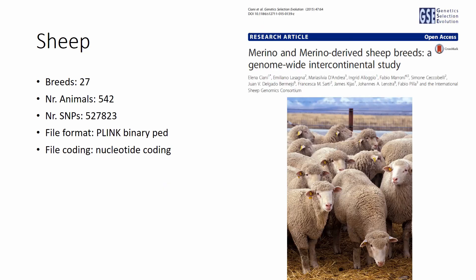And here is yet another sheep dataset published in GSE from 47 breeds, 542 animals, and more than half a million SNPs. The file format is a convenient PLINK binary BED file with nucleotide coding.